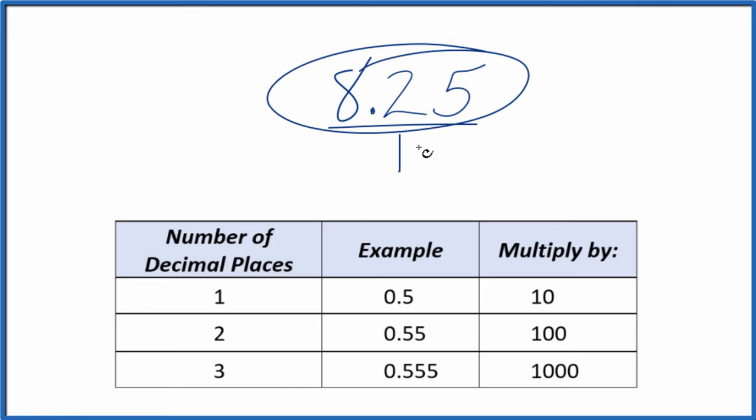We need to get the numerator to be a whole number. And to do that, we have two decimal places. So we're going to multiply by 100.